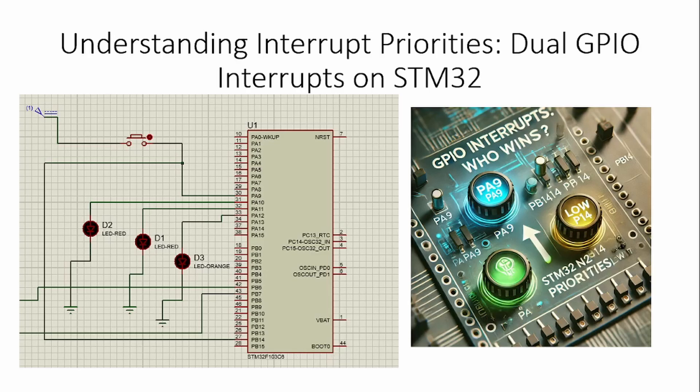Hello friends, welcome back to my channel. Today we are diving into the world of hardware interrupts with priority. In the last video I demonstrated how to use GPIO interrupts, how to configure GPIO interrupts, how STM32 handles this type of interrupt, and what an interrupt subroutine is. Today I will demonstrate the concept of interrupt priority — when multiple interrupts are simultaneously generated, how the microcontroller handles those interrupts based on priority.